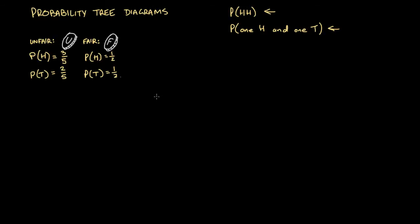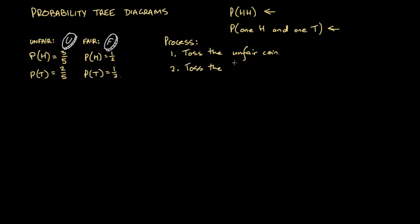The process we're going to follow is: first we toss the unfair coin, record that result, and then toss the fair coin. We've been asked to calculate the probability of getting one head and one tail across these two tosses.